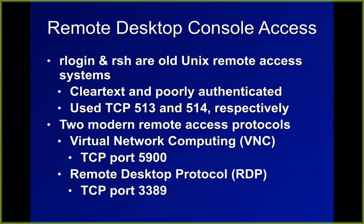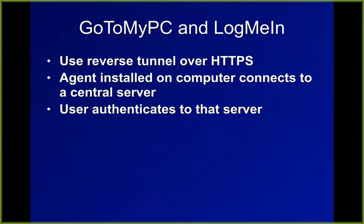If you want remote control of a machine, you can use Rlogin and RSH on old Unix systems with no encryption — those are really out of date. The modern solution for graphical desktop control is VNC for a Linux box and Remote Desktop Protocol for a Windows box. Both have encryption in modern versions, and RDP in particular gives you a nice graphical experience over the internet.